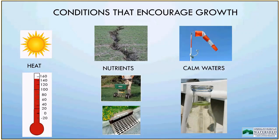Nutrients are important for the growth of all living creatures, and cyanobacteria's food is primarily phosphorus and nitrogen. In order to grow a large number of cyanobacteria cells, you need a large amount of these nutrients. We tend to find our worst blooms — the densest, thickest, and most long-lasting — in our lakes that are nutrient-rich. By controlling the amount of nutrients reaching our water, we can significantly reduce the occurrence of cyanobacteria blooms.